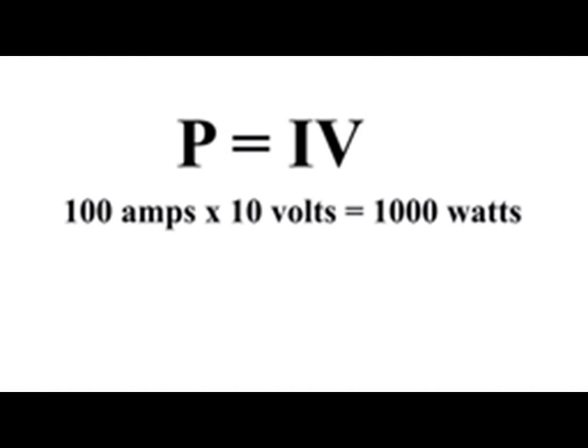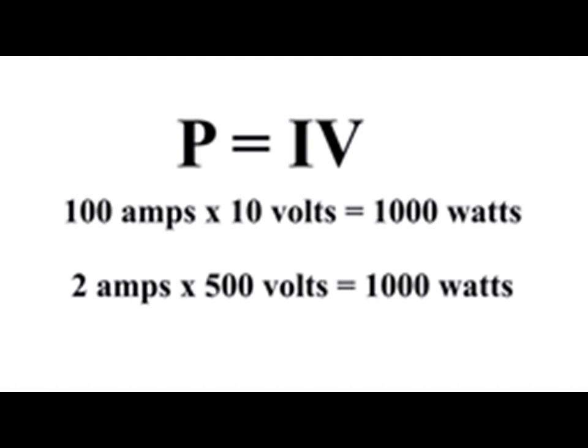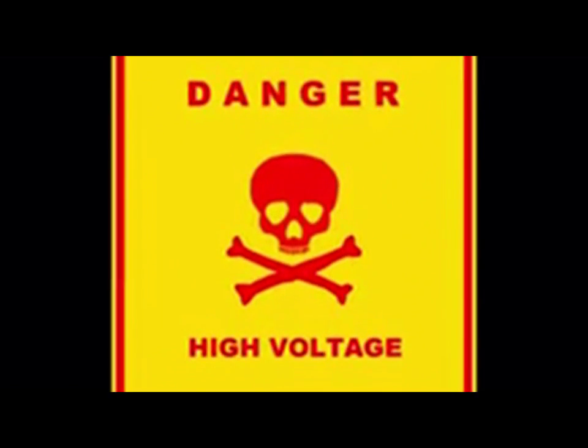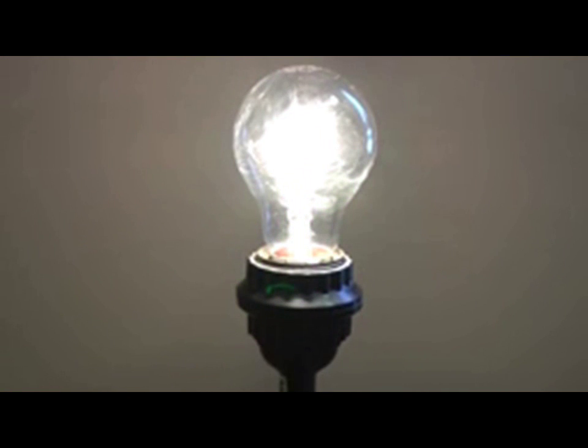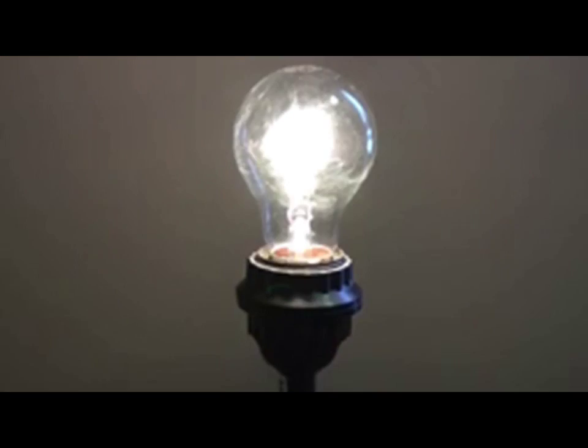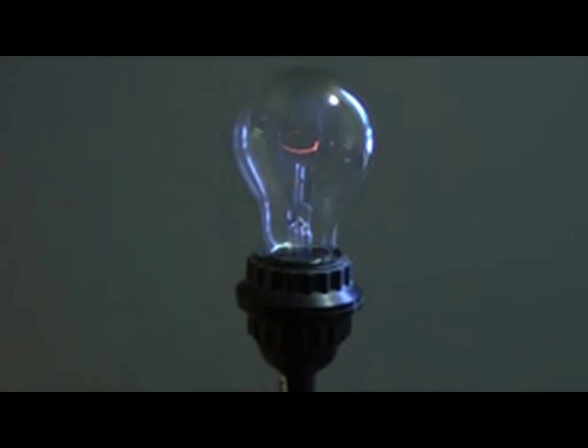For example, 100 amps × 10 volts = 1,000 watts, and 2 amps × 500 volts also = 1,000 watts, with the advantage of a small current in the wire. Edison knew that higher voltages and lower currents would resolve the line loss problem, but high voltages were dangerous — there had already been deaths. It was not possible to safely deliver electricity at 1,000 volts or more into homes, so he had no solution to the I²R problem.